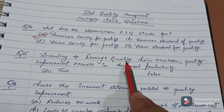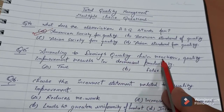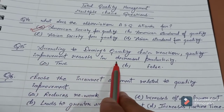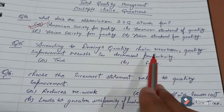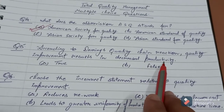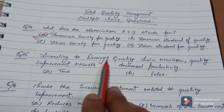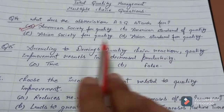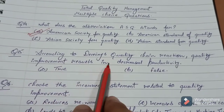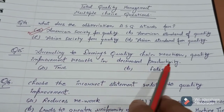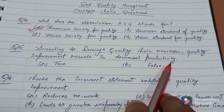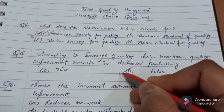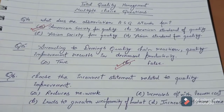According to Deming's quality chain reaction, quality improvement results in decreased productivity. Kya Deming quality chain ke mutabik, quality improvement jab hoga that results in decreased productivity — this statement is false or true? Obviously, this statement is false.